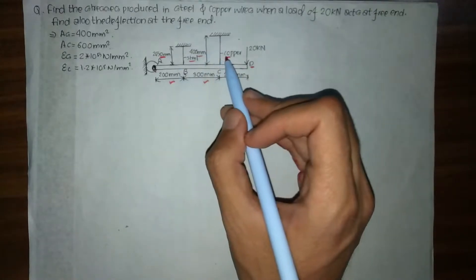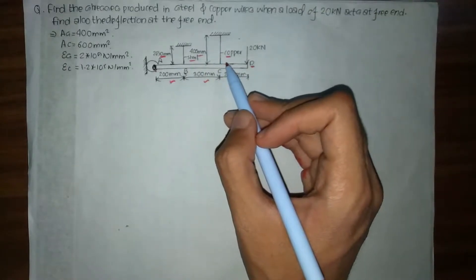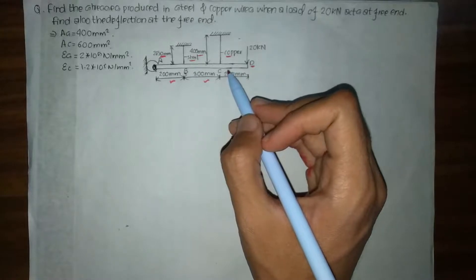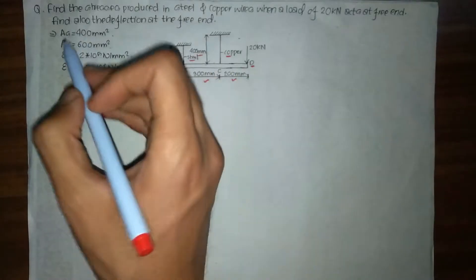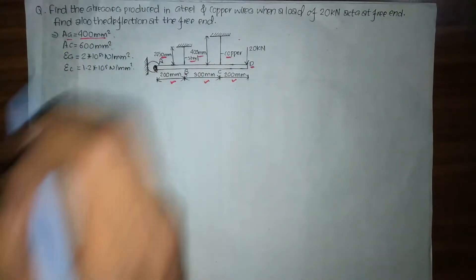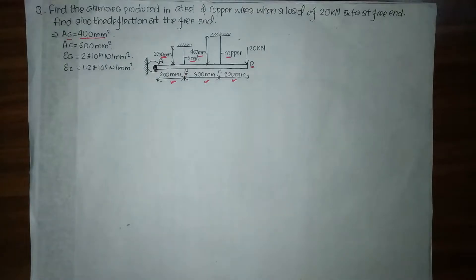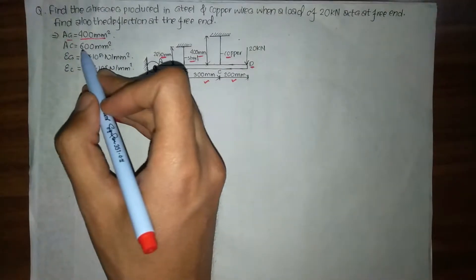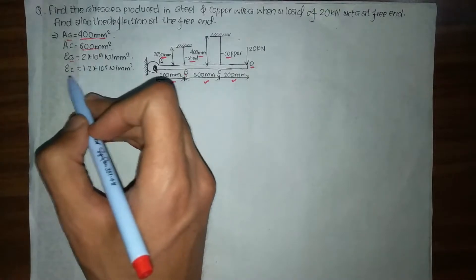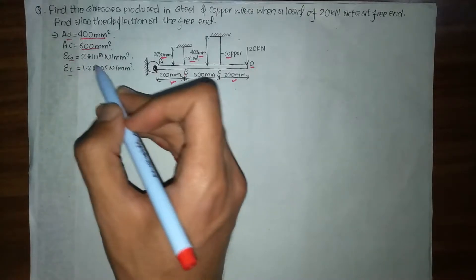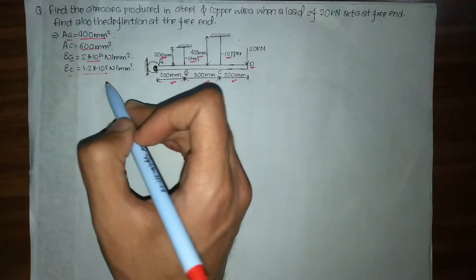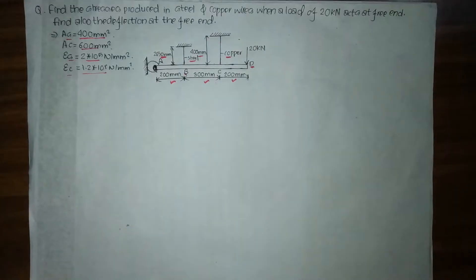Next, the given data: the area of the steel bar is 400 mm², the area of the copper bar is 600 mm², and the Young's modulus of elasticity for the steel and copper bars are respectively 2×10⁵ and 1.2×10⁵ N/mm².